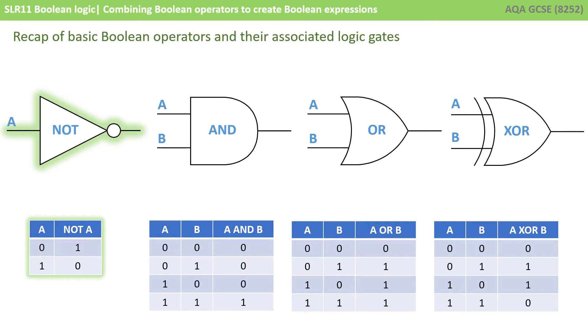On the left we see the NOT gate that simply reverses the input. Then we have our AND gate where both inputs have to be true for the output to be true. Then we have the OR gate where at least one input needs to be true and as long as that's the case the output is true. And finally the XOR or exclusive OR gate where only one input is allowed to be true, the other one must be false, and in this case the output is true.